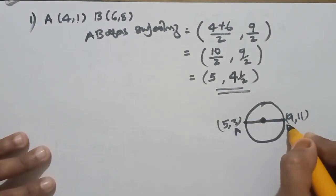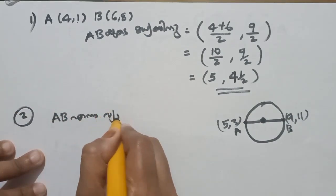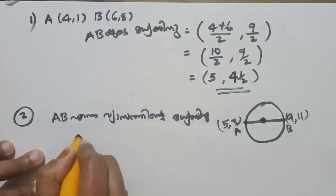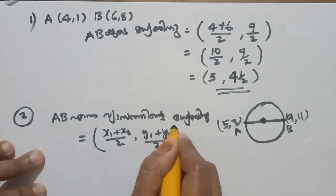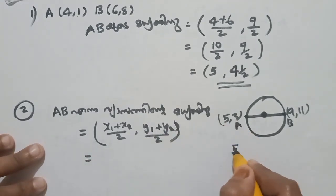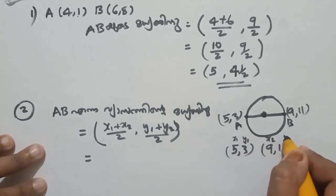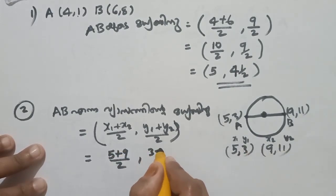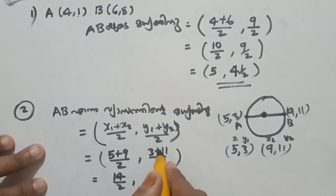Here we have A and B. A, B is the midpoint step. How do we get the midpoint? Using the formula: x1 plus x2 by 2, y1 plus y2 by 2. Here x1, y1 is (5, 3) and x2, y2 is (9, 18). So 5 plus 9 by 2 and 3 plus 18 by 2. That gives 14 by 2, which is 7, and 21 by 2.